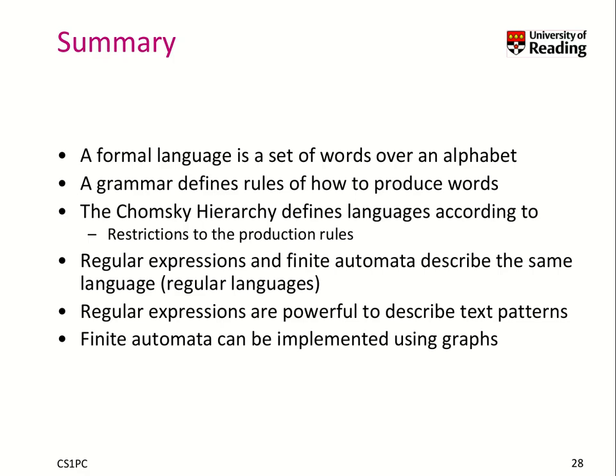To wrap up today's lecture: a formal language is a set of words over an alphabet. A grammar defines the rules for how to produce words. Similar to the E, B, and F, the Chomsky hierarchy defined these languages according to certain restrictions to the production rules.